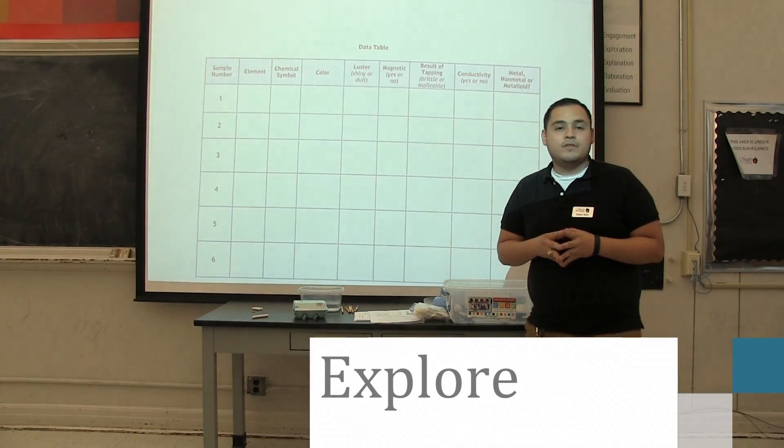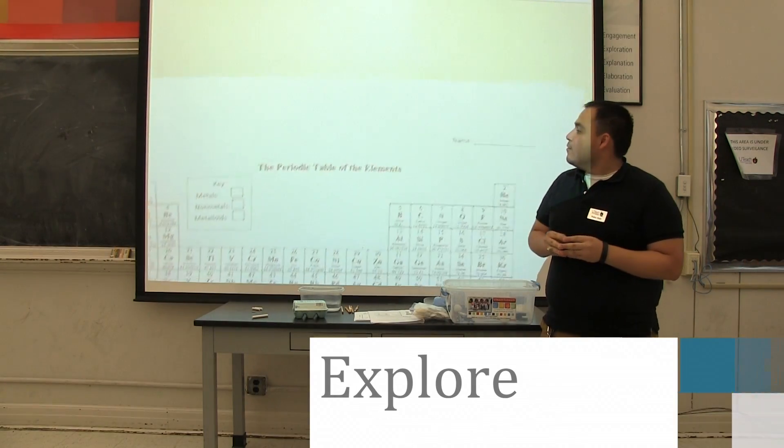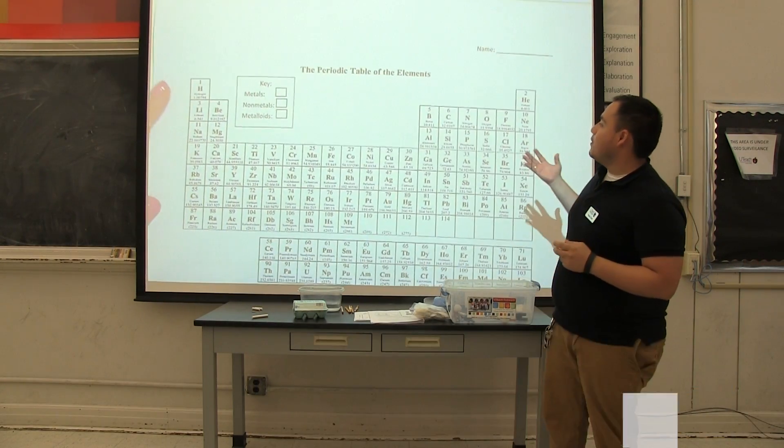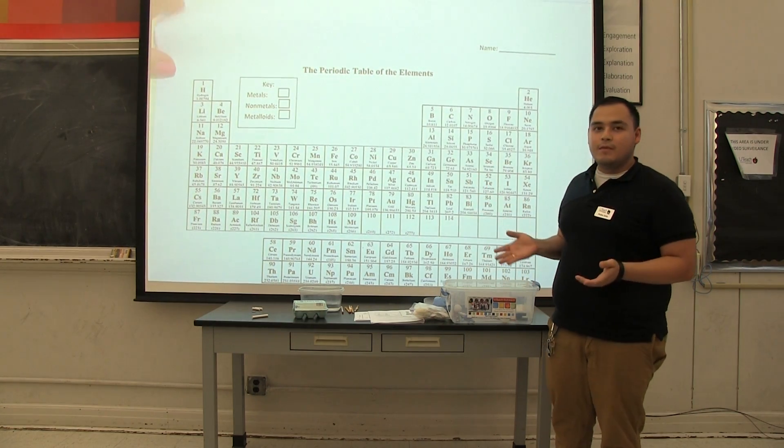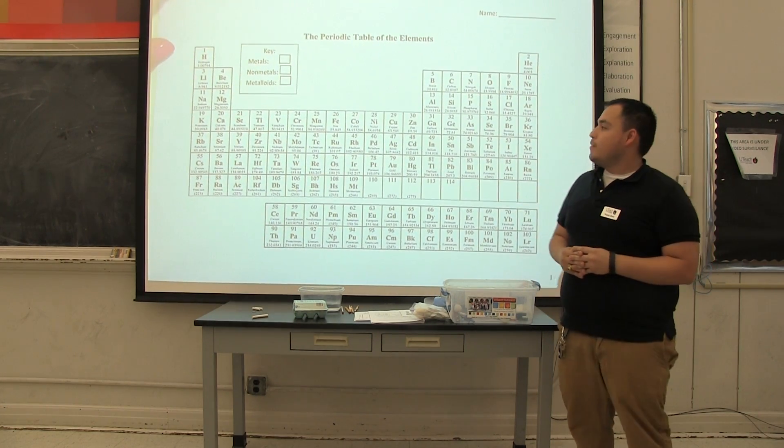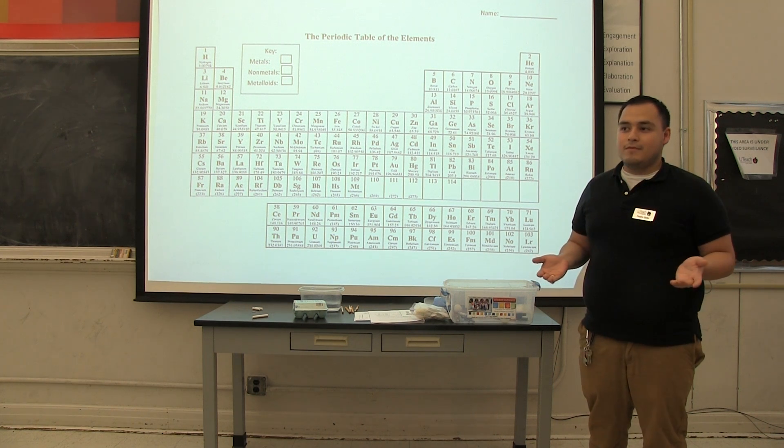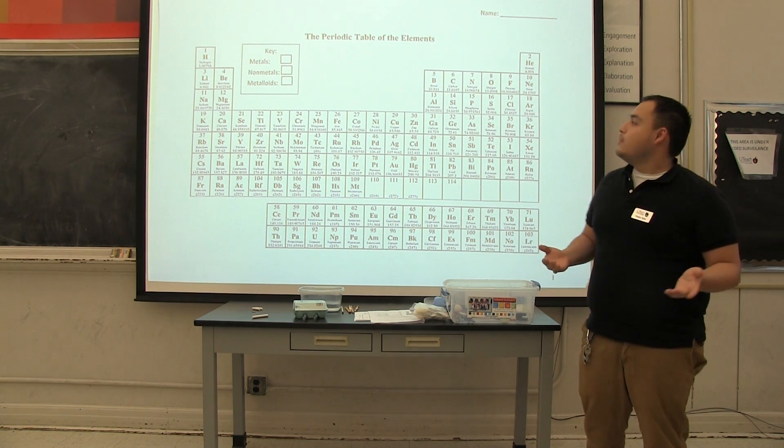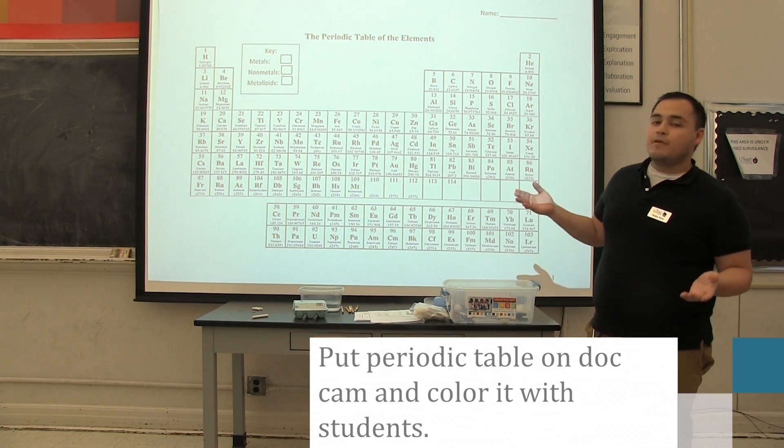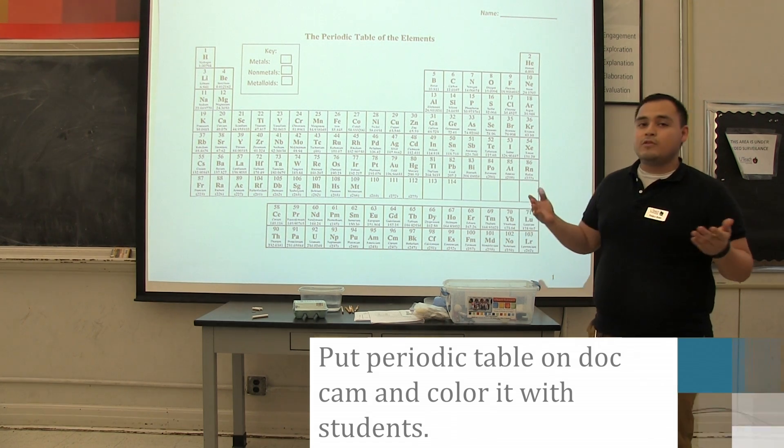So now that we observed some metals and non-metals, we're going to color in our periodic table. Has everyone seen the periodic table before? Yes. So what does the periodic table have? Elements. Elements. So today we're going to color in which ones are metals, non-metals, and which ones are metalloids.